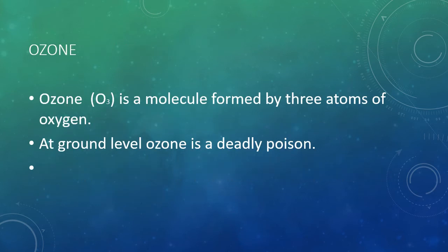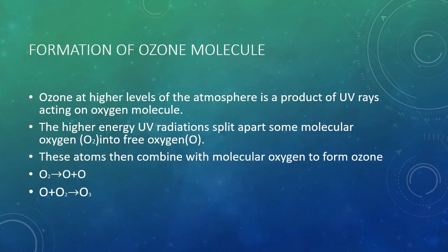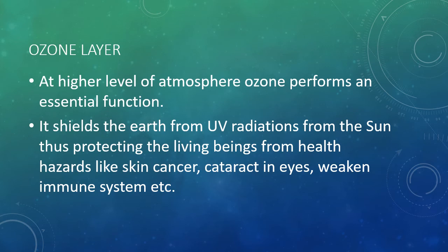Ozone: Ozone is a molecule formed by 3 atoms of oxygen. At ground level, ozone is a deadly poison. Ozone at higher levels of the atmosphere is a product of ultraviolet rays acting on oxygen molecules. The high energy ultraviolet radiations split apart some molecular oxygen into free oxygen atoms. These atoms then combine with molecular oxygen to form ozone. At higher levels of the atmosphere, ozone performs an essential function — it shields the earth from UV radiations from the sun, thus protecting living beings from health hazards like skin cancer, cataract, weakened immune system, etc.